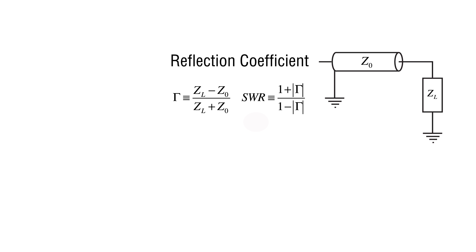Note that the load impedance can be a complex number if it is comprised of resistive and reactive elements — that is, resistors, capacitors, and inductors. The transmission line characteristic impedance is usually assumed to be resistive with a value of 50 ohms.